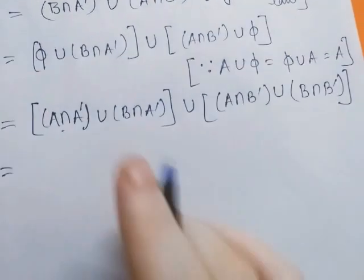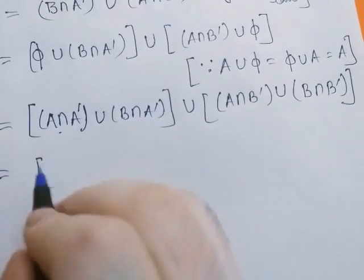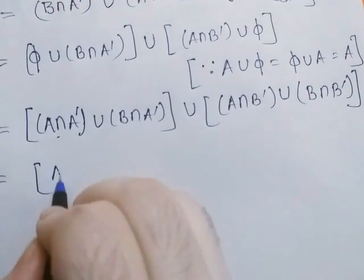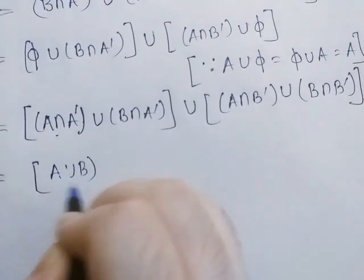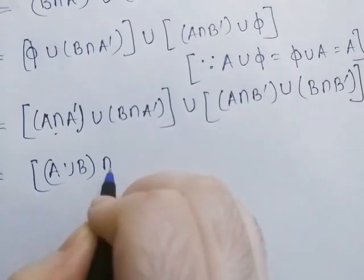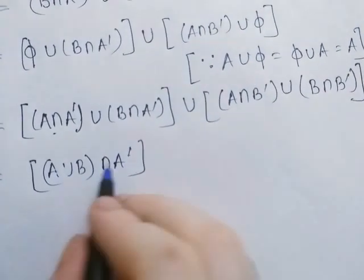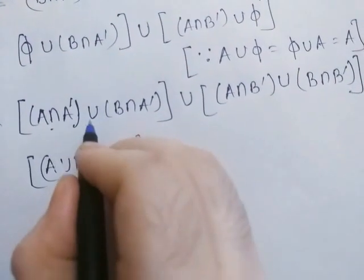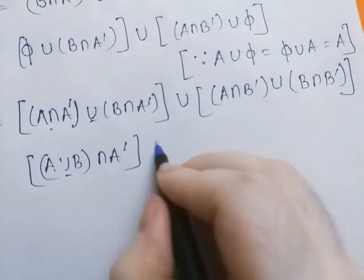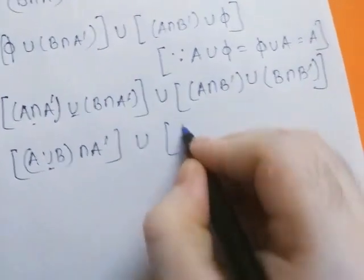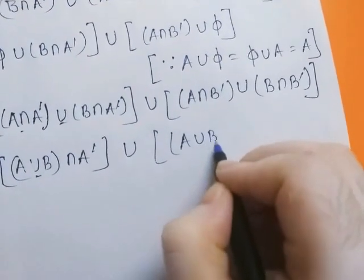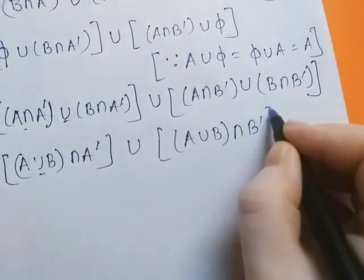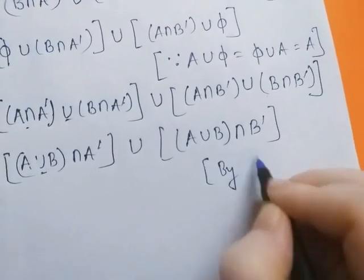Now we apply the distributive law. This can be written as (A ∪ B) ∩ A', because (A ∩ A') ∪ (B ∩ A') equals (A ∪ B) ∩ A' by the distributive law. Similarly, (A ∩ B') ∪ (B ∩ B') equals (A ∪ B) ∩ B' by the distributive law.